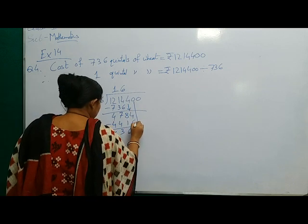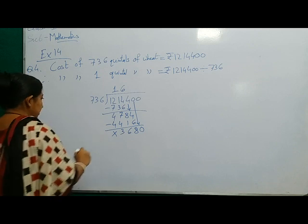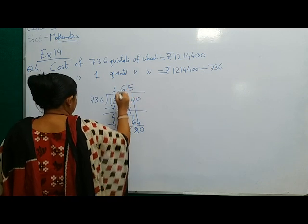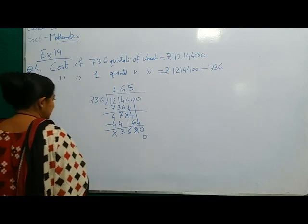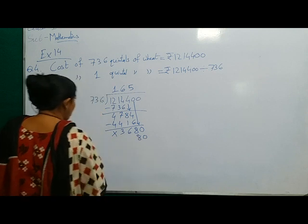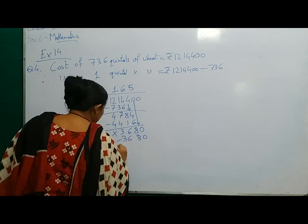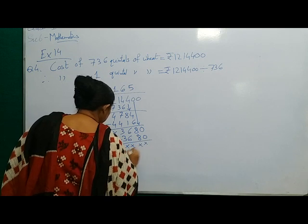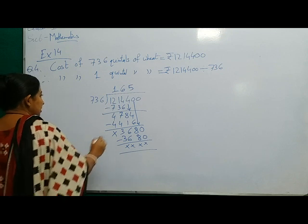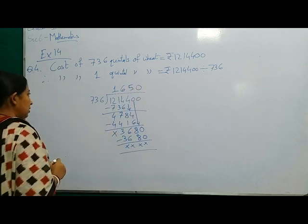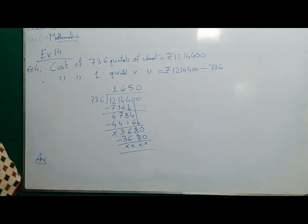Now this 0 will come down. Again multiply by 5. 5 times 6 are 30 carry 3, 5 times 3 is 15, 16, 17, 18 carry 1, 5 times 7 is 35 plus 1, 36. By subtraction you are getting 0. Now 0 is left, this 0 will go upstairs. So our answer is 1650.